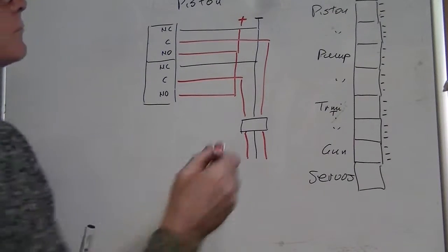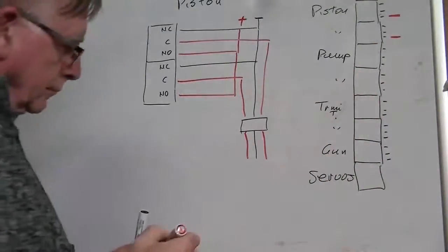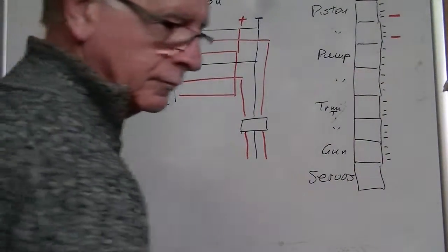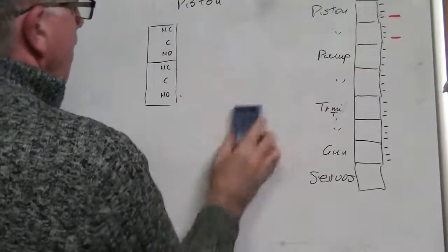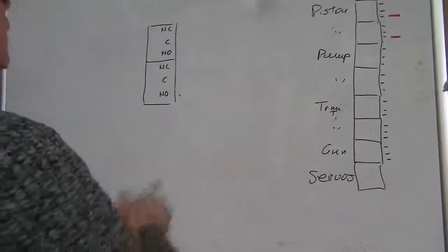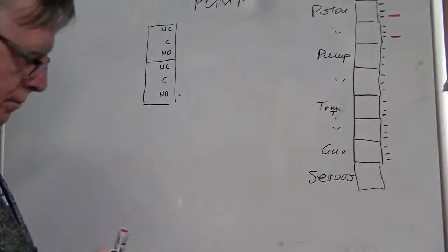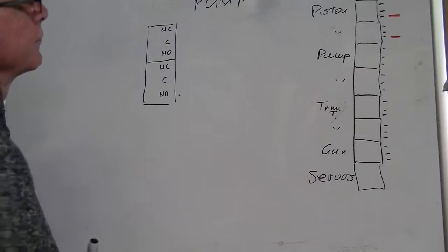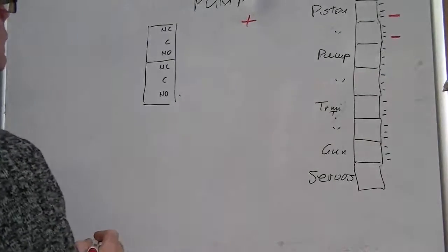But it means that I've got positive going to the normally open of the two piston relays. And part of the exercise that I'm going through here is I want to work out where the positives and the negatives go all the way down this line on this long track of pumps. So the pump, now this is the main pump.